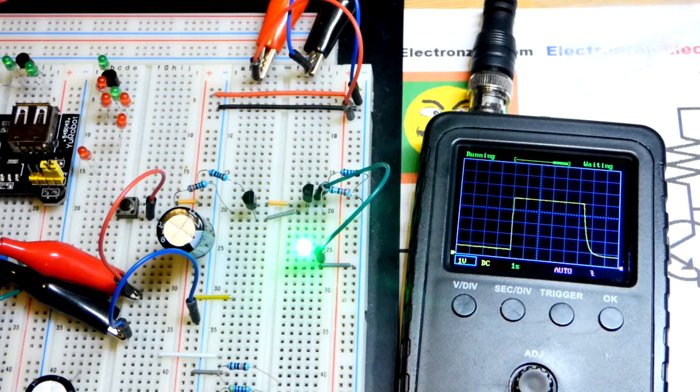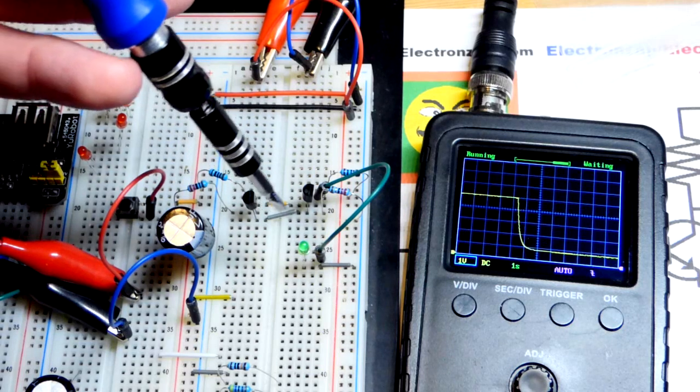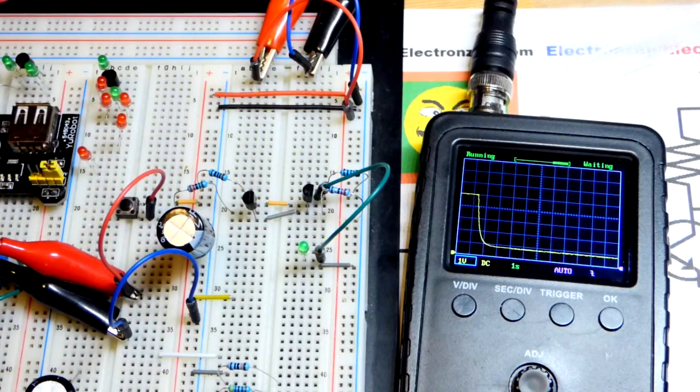When I let go, the capacitor discharges through the resistor, the transistor base to emitter and the 22 ohm resistor.